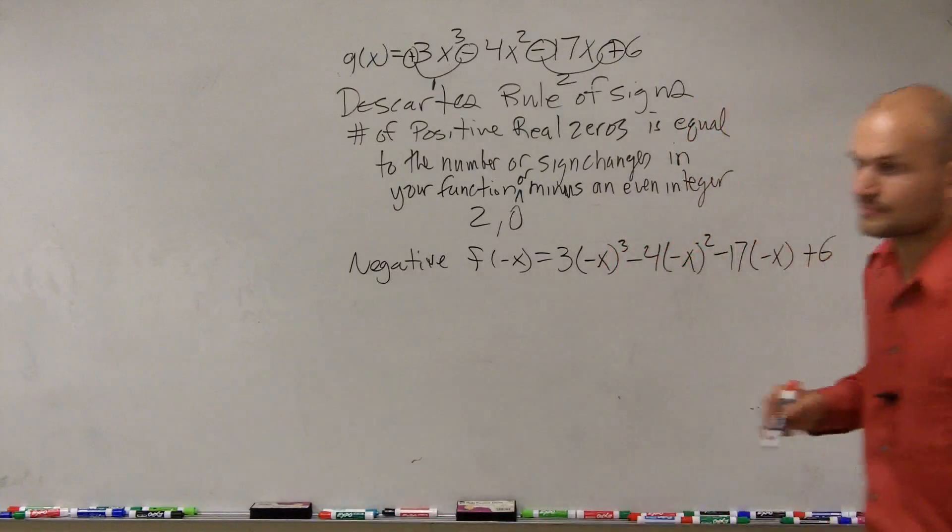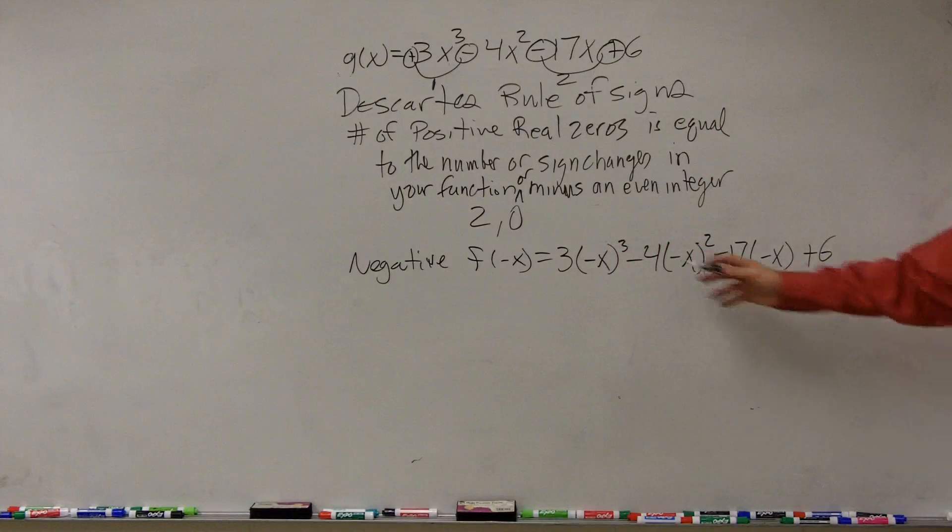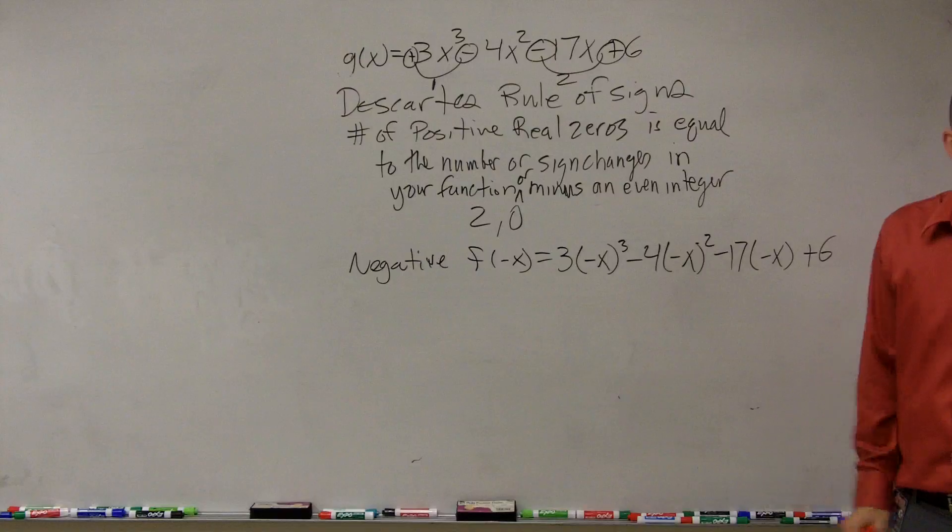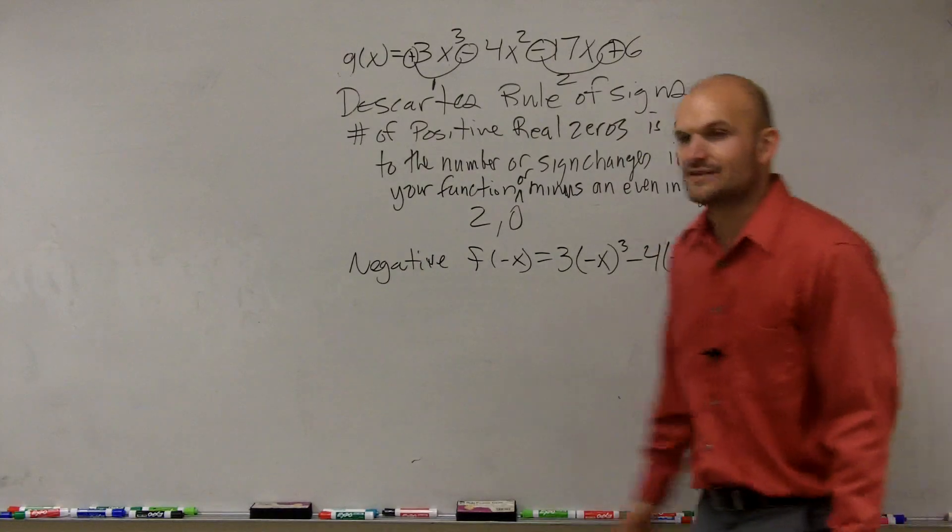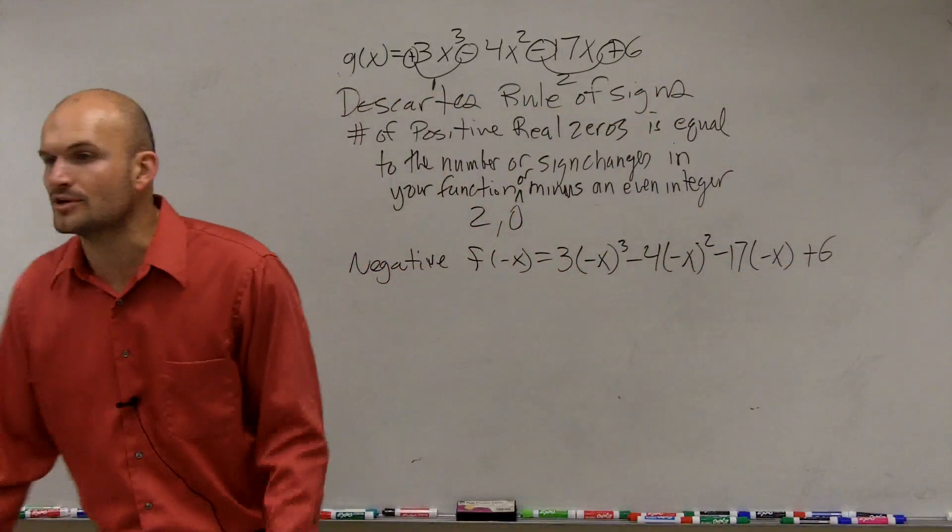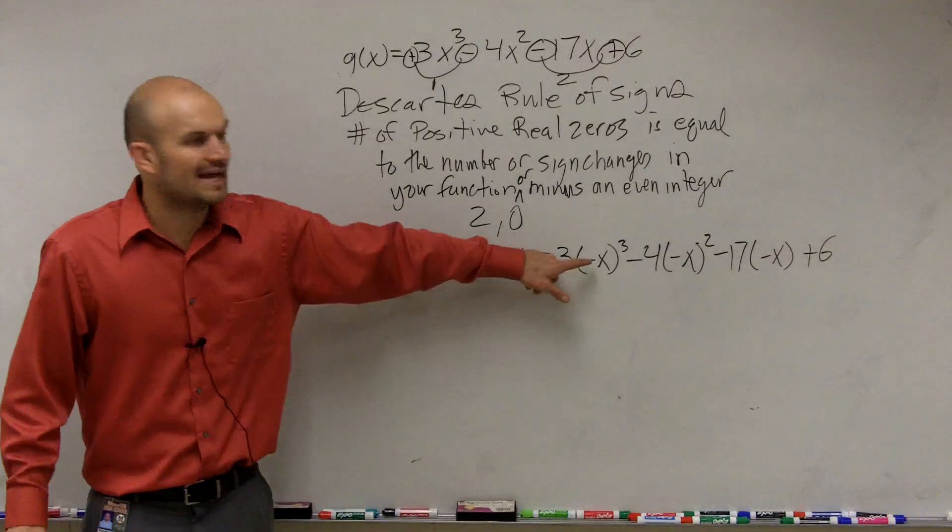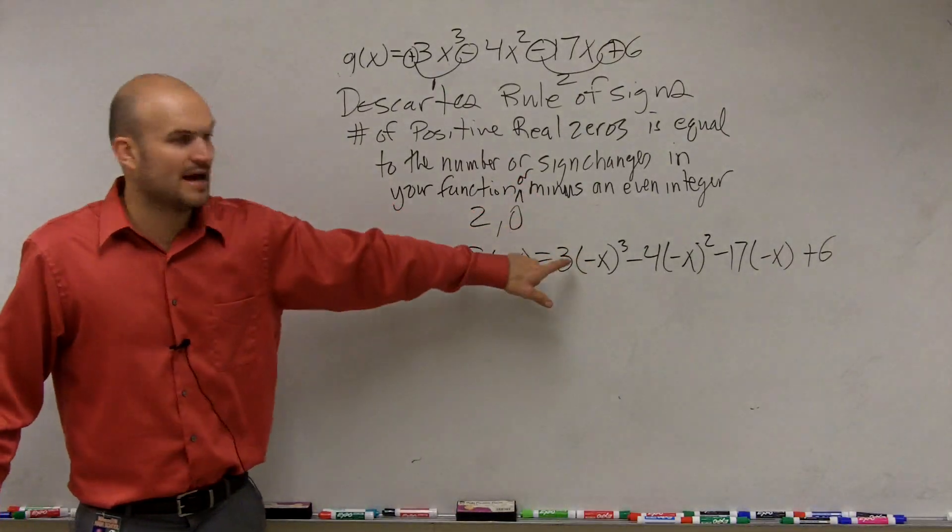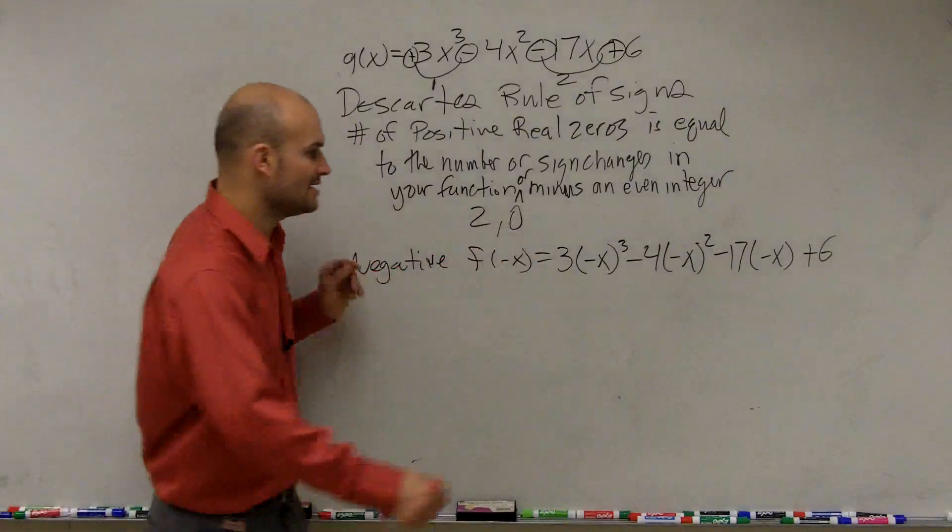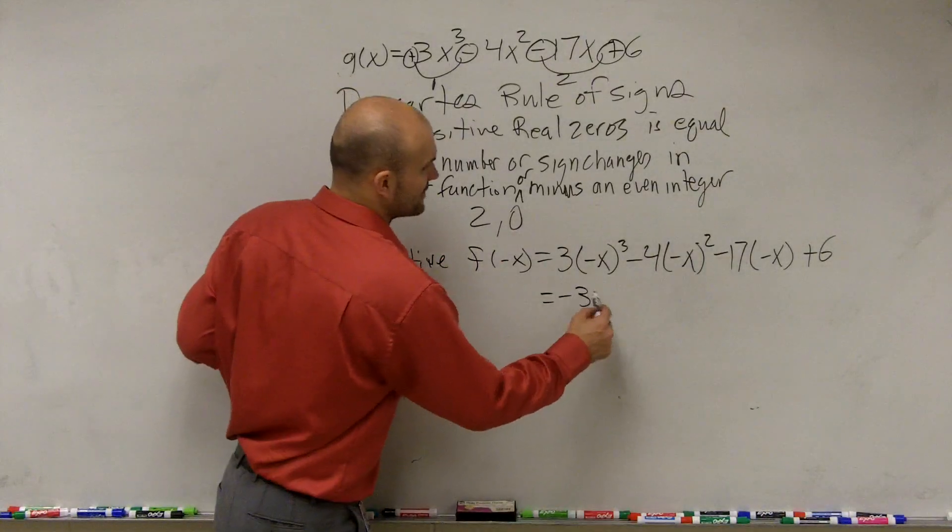So we're going to do 3 times negative x cubed minus 4 times negative x squared minus 17 times negative x plus 6. So it's the exact same thing, but now we've got to make sure we evaluate for f of negative x. So remember, any negative number raised to an odd power is still going to produce a negative number. So negative x cubed is still negative. So now that negative x cubed times 3 will produce now a negative 3x cubed.